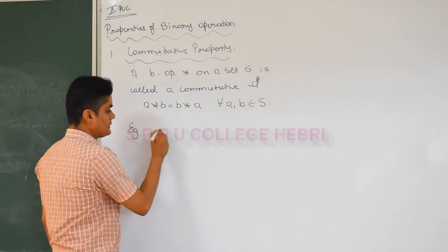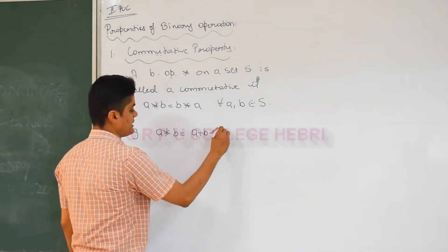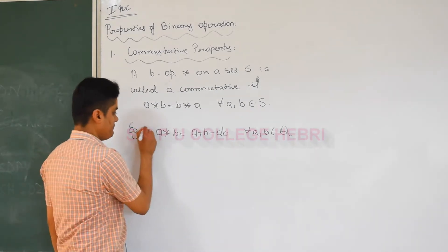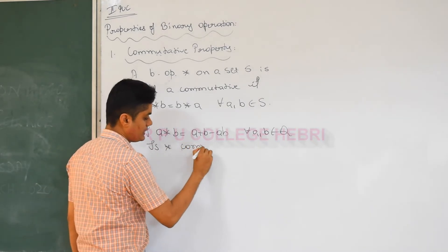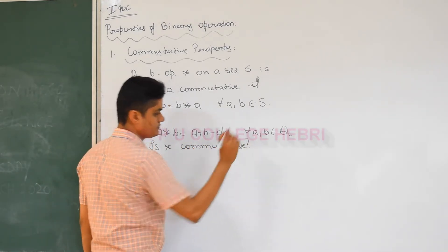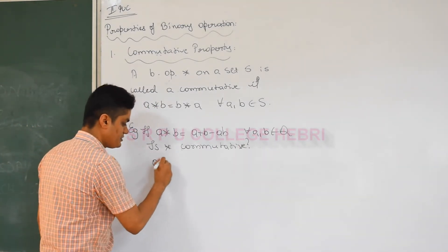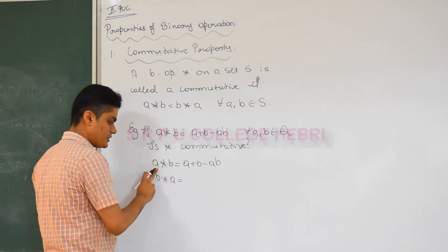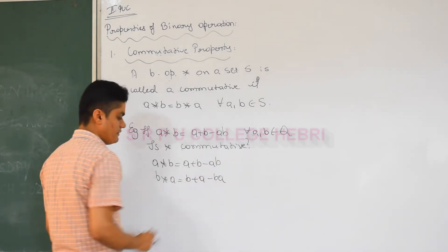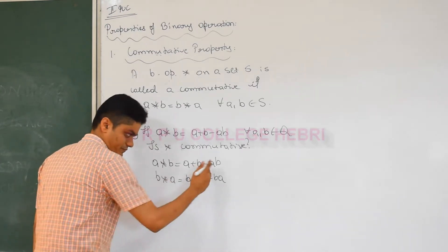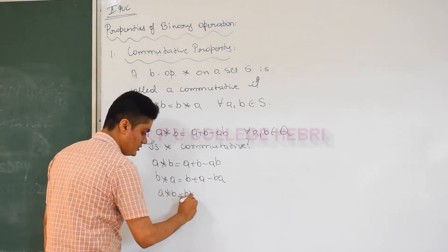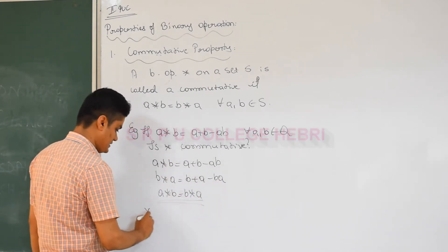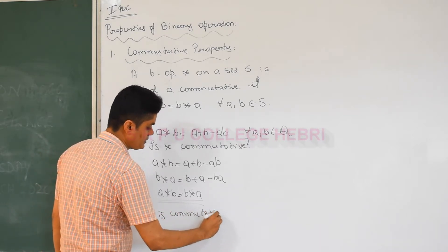For example, A star B is equal to A plus B minus AB, for all A, B belonging to Q, the rational numbers. To verify: A star B equals A plus B minus AB. Now B star A — replace A by B and B by A — gives B plus A minus BA. You can easily observe that A star B equals B star A, because A plus B equals B plus A, and AB equals BA. So star is commutative.